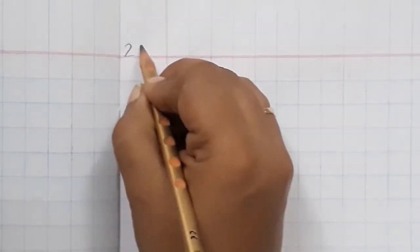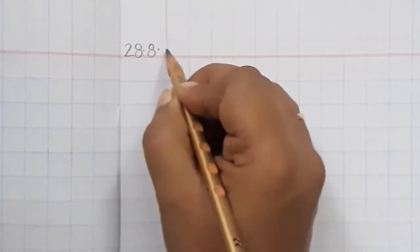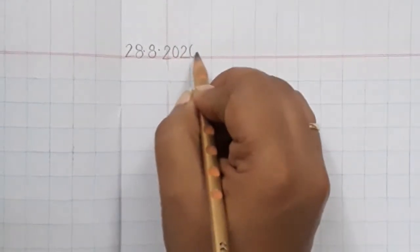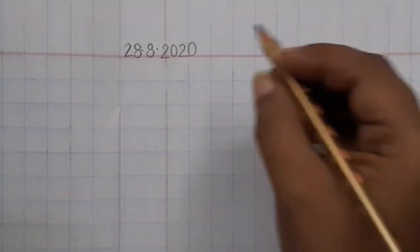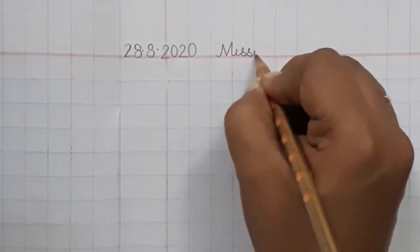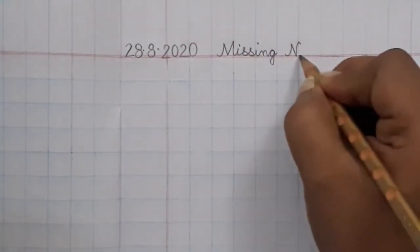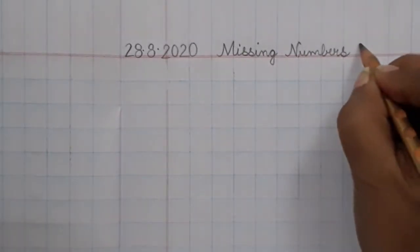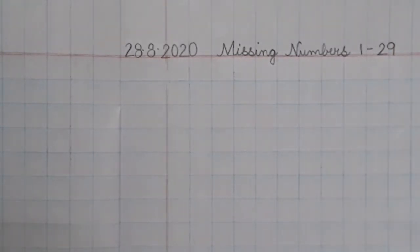Quickly write the date in the margin. Today is 28.8.2020. And over here on the red line, please ask mama or daddy to help you by writing this title for you: Missing Numbers 1 to 29. Okay.